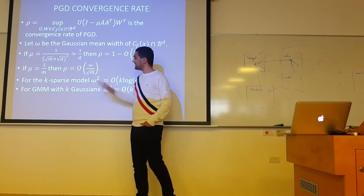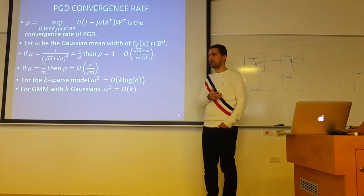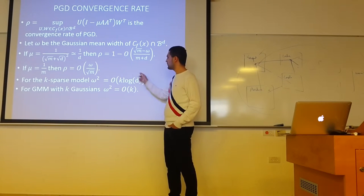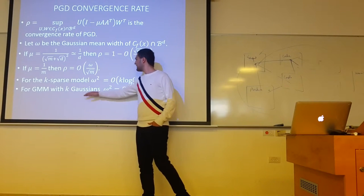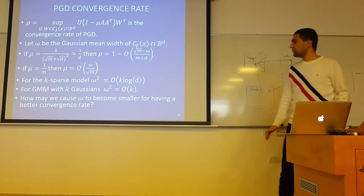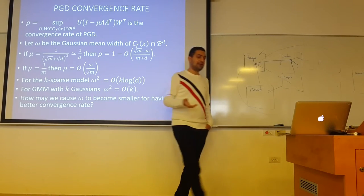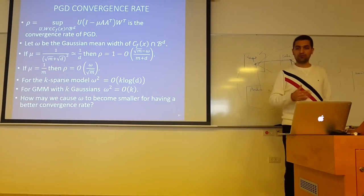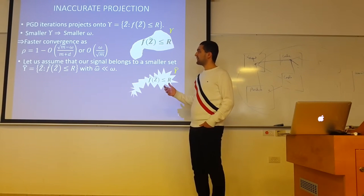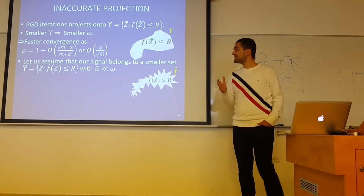So the convergence of the PGD algorithm depends on the intrinsic dimensionality of the data. Our suggestion to accelerate the projected gradient algorithm is to use an inaccurate projection. Let's assume you are using PGD with a projection that depends on function f. However, there is another more complicated function f-hat that defines a set with a smaller Gaussian mean width — but the problem is you don't know how to project onto this set. So instead, we use the simpler projection with PGD.